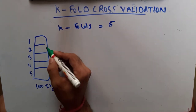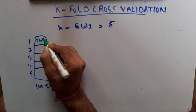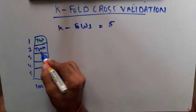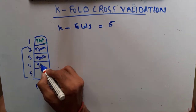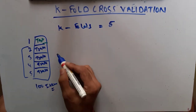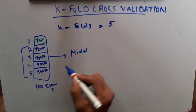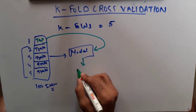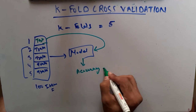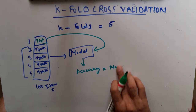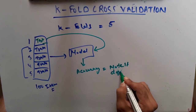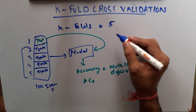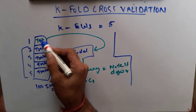In the first iteration, I keep this first subset of data for testing and the other four parts for training. I train my model on the training data, then give this test data to the model and get an accuracy. Let's call this accuracy one.